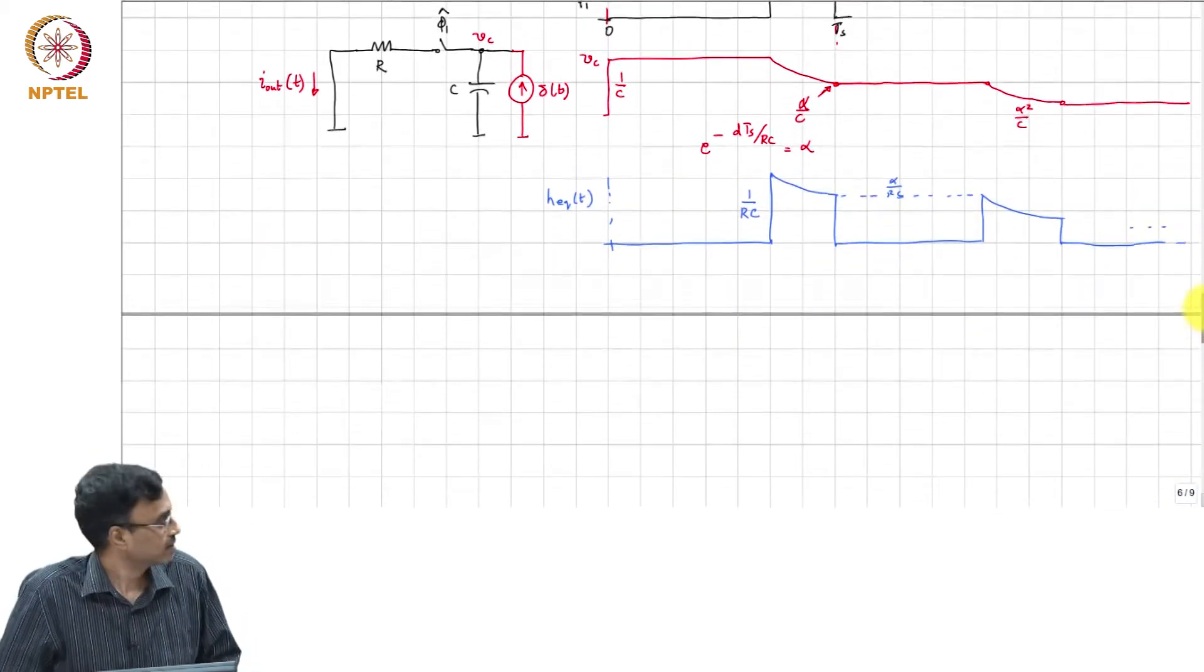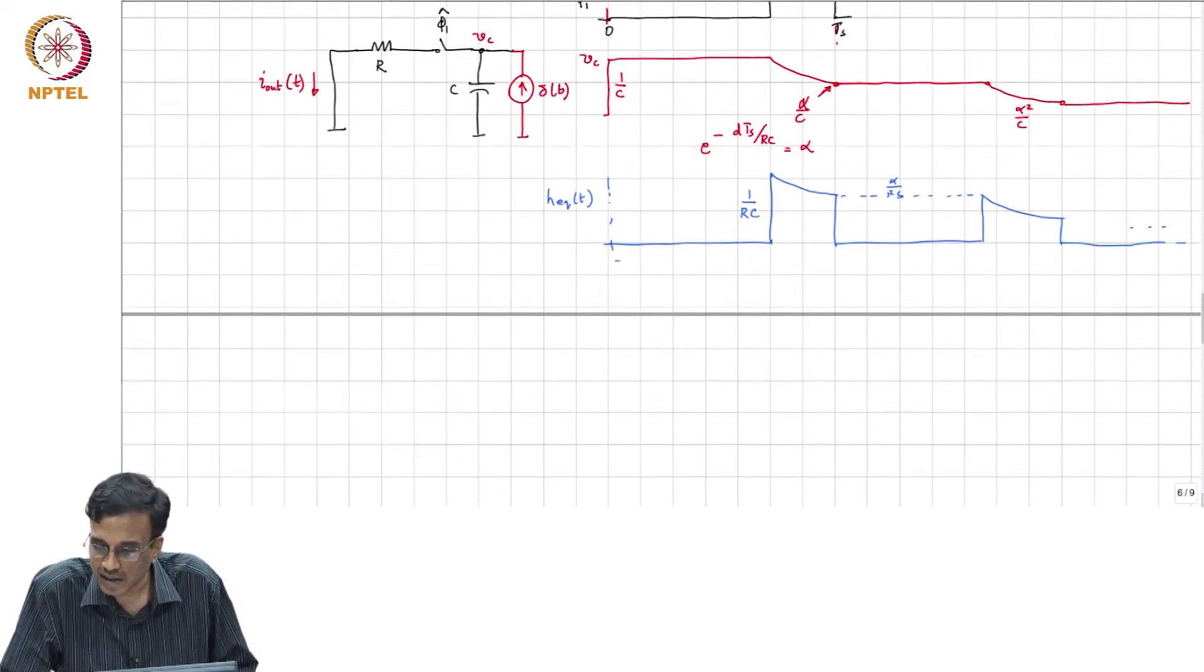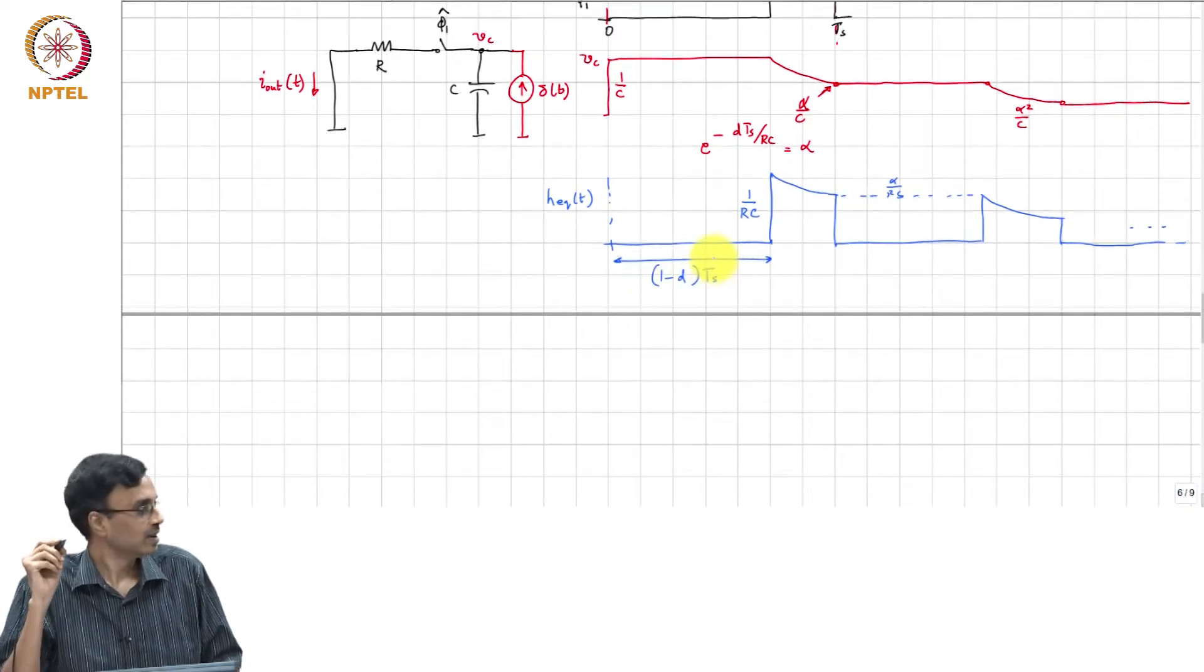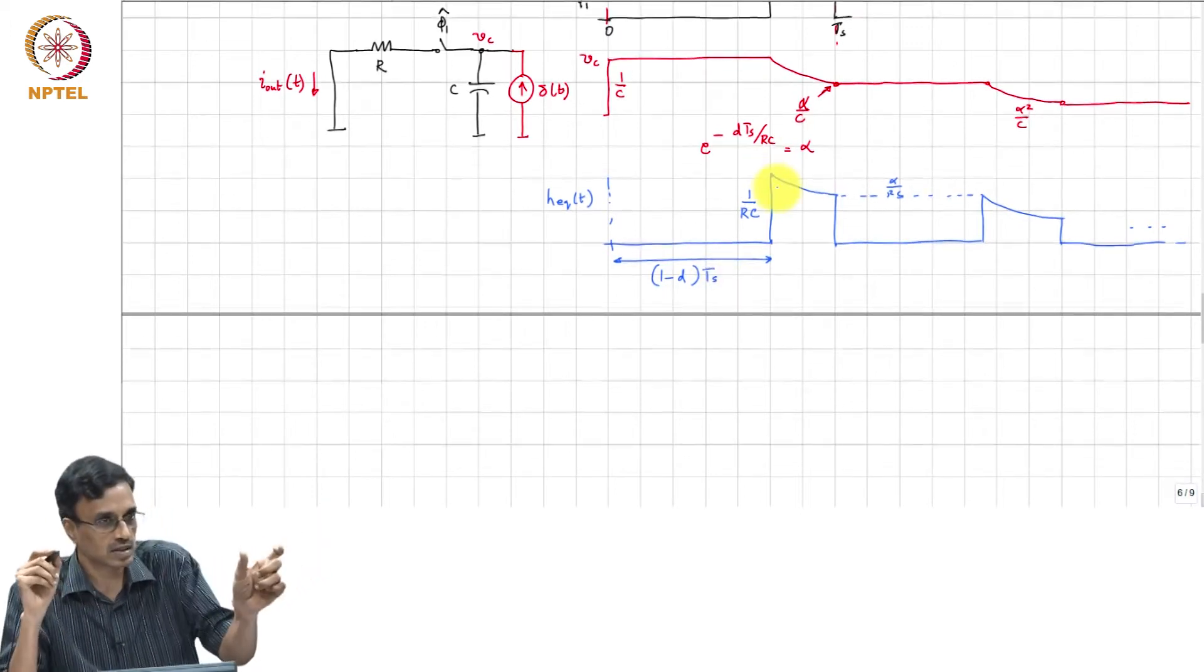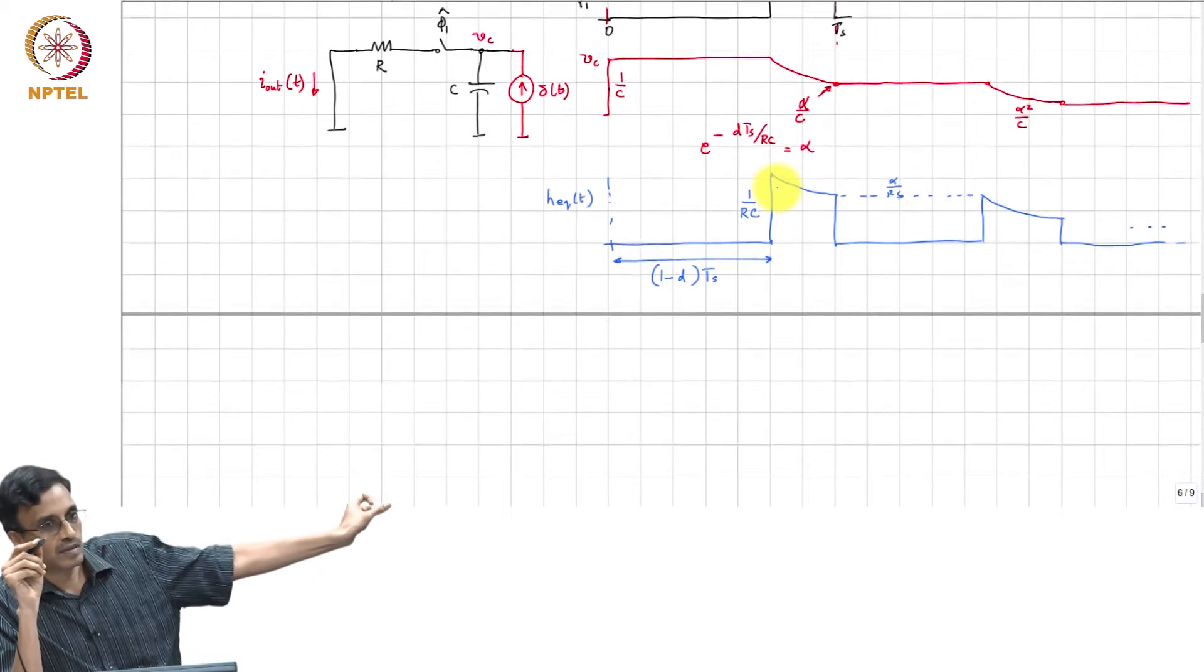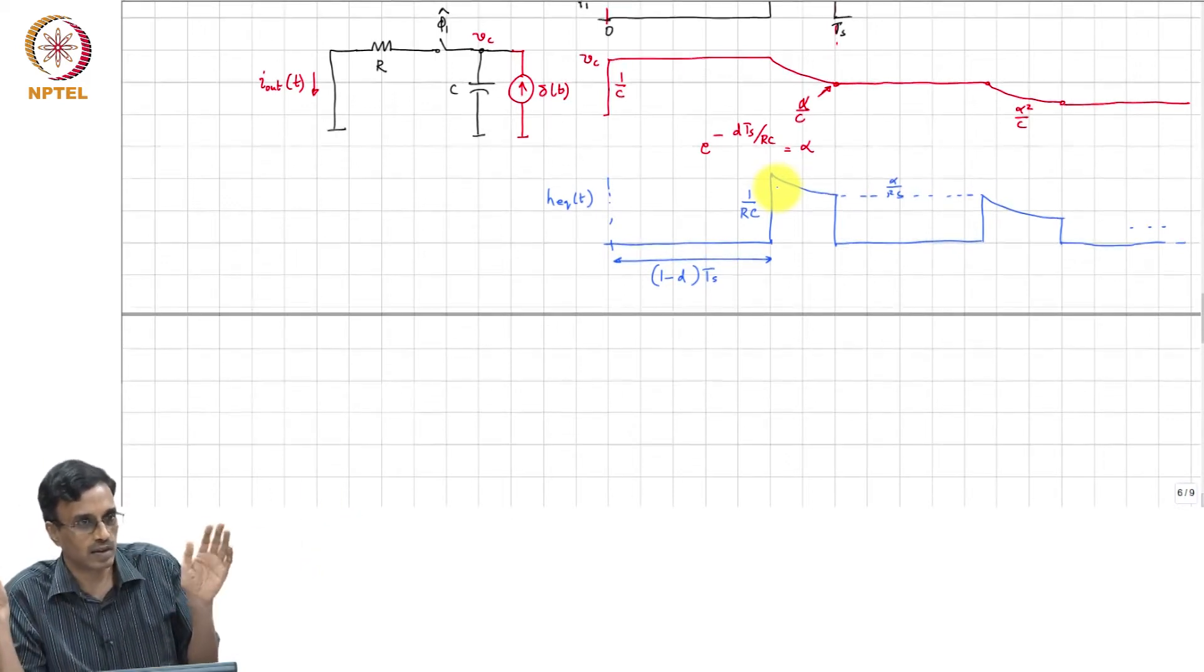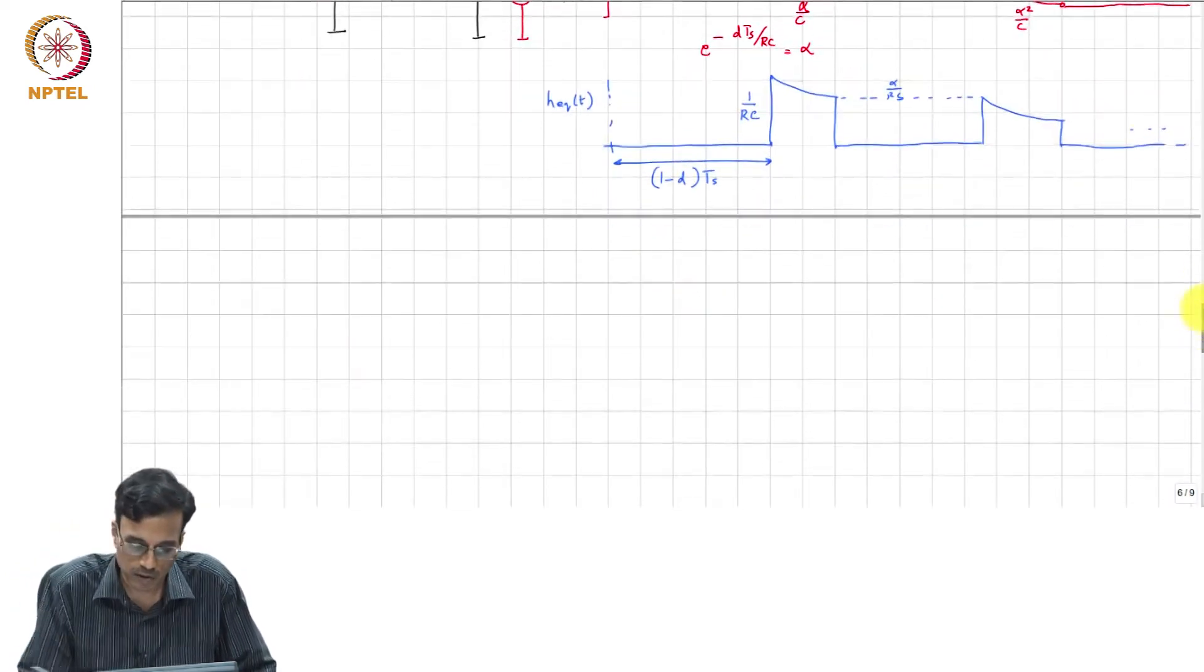So, what is the Fourier transform? How does this look like in the frequency domain? Well, this is delayed by 1 minus D times Ts. So, basically, we find the Fourier transform of the rest of this. We can just simply multiply by e to the minus J 2 pi F times 1 minus D times Ts to get the Fourier transform of H equivalent. So, what is the Fourier transform of?